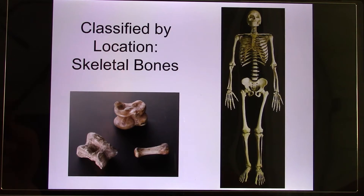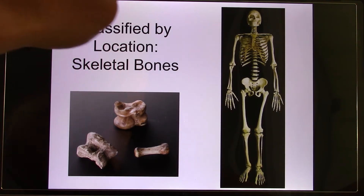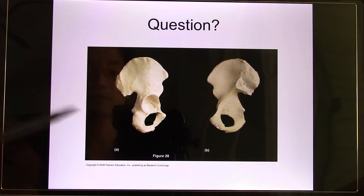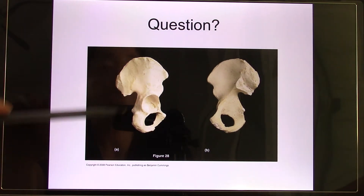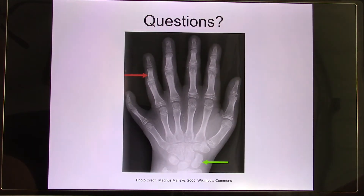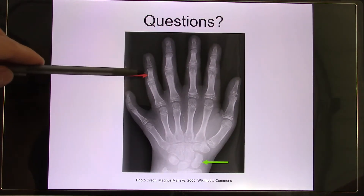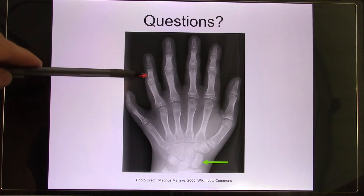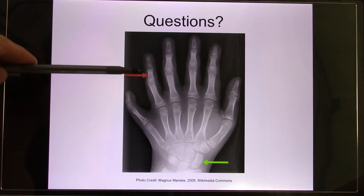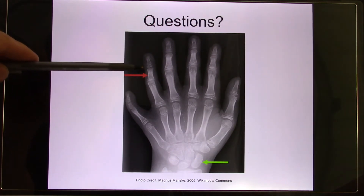We can also put bones into different categories based on location, like the axial bones and appendicular bones. For example, the pelvic bone — it's irregular. Like the finger, phalanges — that's a long bone, even though it's short, but it's based on the shape. So phalanges are the long bones.